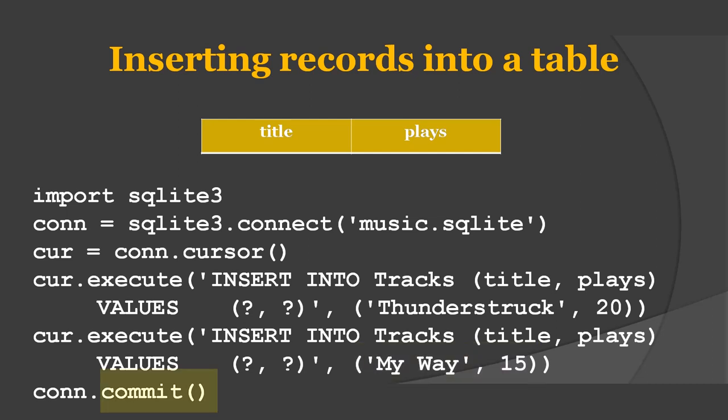Lastly, we use the commit method to store the inserted records permanently onto the database table. The reason why we are using this commit method is that if this method is not applied, then the insertion will be temporary and will affect only the current run of the program. That's why we're using this commit method.